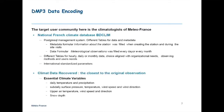Daily and monthly data are consistent with hourly data. In the national French climate database, we have all international standardized parameters. For data rescue, we recover the essential climate variables — the closest data to the original observations. We recover daily temperature and precipitation, sub-daily surface pressure, sub-daily temperature, sub-daily wind speed and wind direction. We also recover upper air temperature, wind speed and direction, and snow depth.